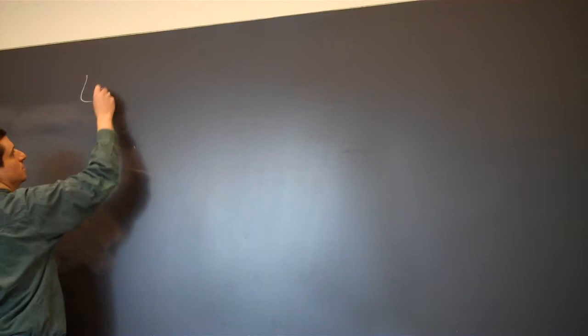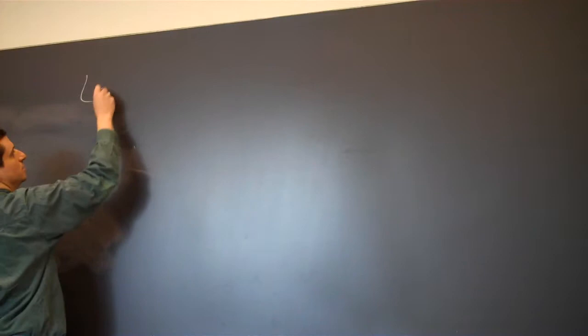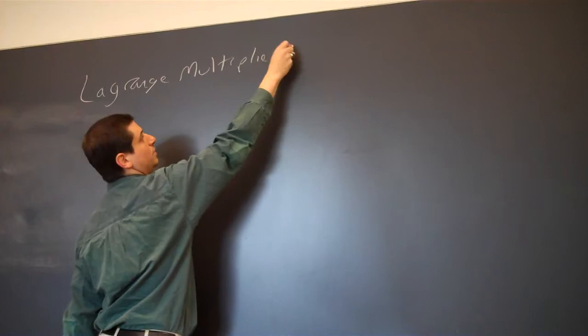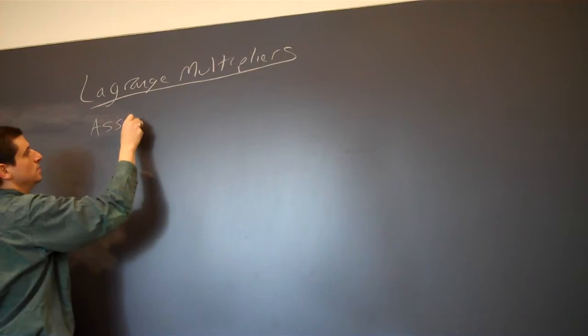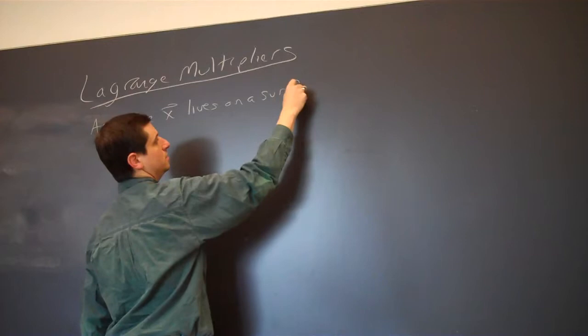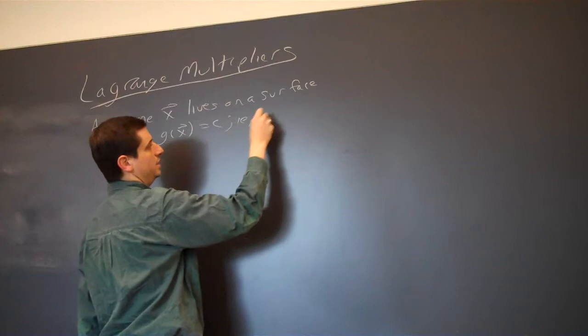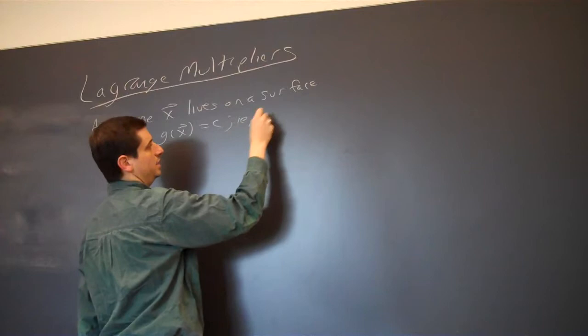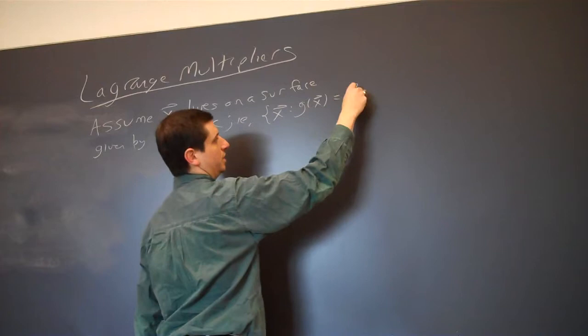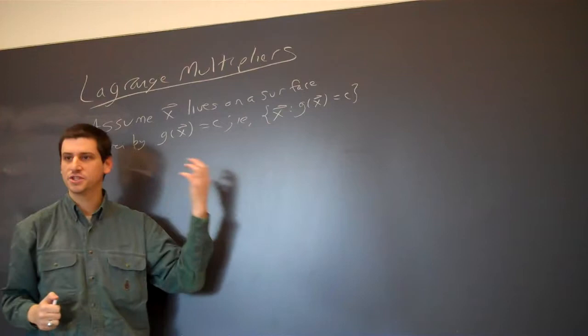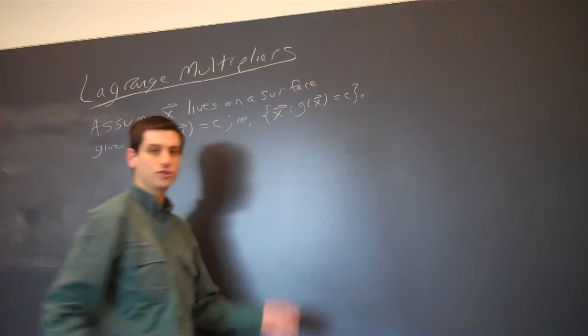That's going to change today with Lagrange multipliers. So the goal of Lagrange multipliers is to handle constraints. Assume x lives on a surface given by g of x equals c — that is, it's the set of all x such that g of x equals c. What does this remind you of? Where have we seen something like this before? Level sets. So this is the level set of the function g at value c.